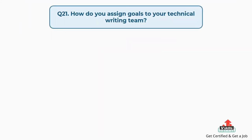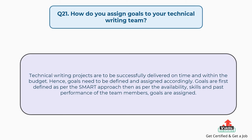Question number twenty-one: how do you assign goals to your technical writing team? Technical writing projects are to be successfully delivered on time and within budget. Hence, goals need to be defined and assigned accordingly. Goals are first defined as per the SMART approach, then assigned based on the availability, skills, and past performance of team members.